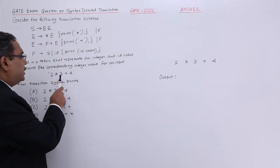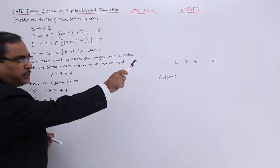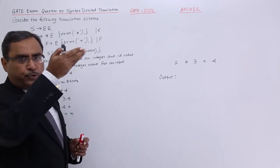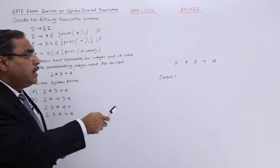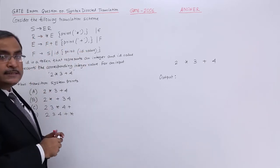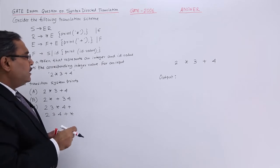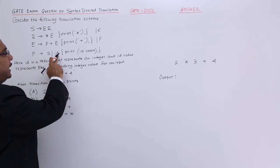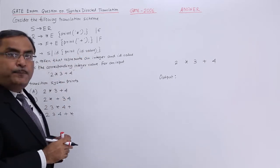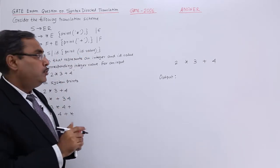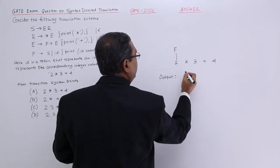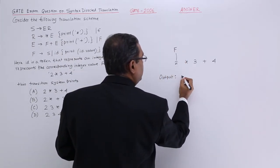Here the input string is 2 star 3 plus 4. Let me construct the parse tree in the bottom up approach. That means from the leaf nodes, I will be reaching to the starting symbol S. At first, we are applying F produces ID and F produces ID is having the semantic action print ID dot value. This is my ID, I am replacing this one with F. It will print 2.